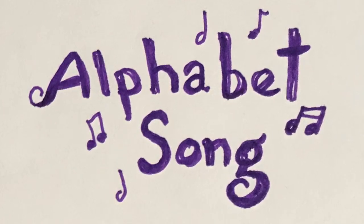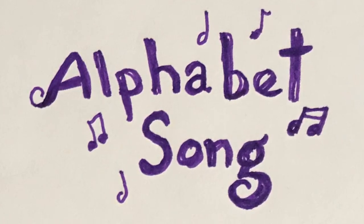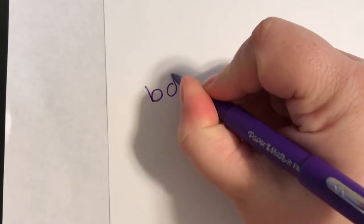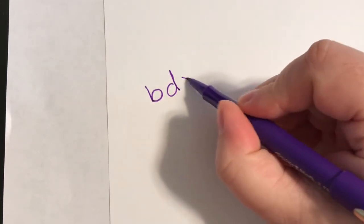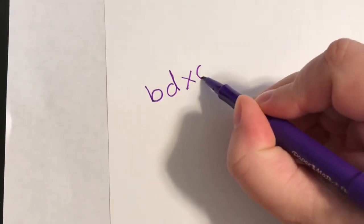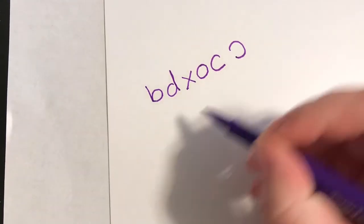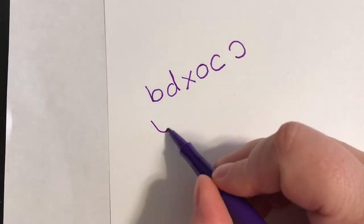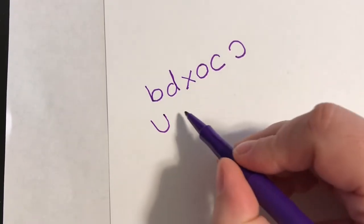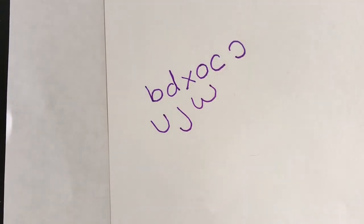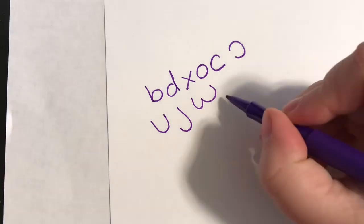Today we're singing the alphabet song. We're going to be using several letters of the alphabet, including B, D, X, O, C, forwards and backwards and upside down, U, J, W, O, and V. Don't forget V. We're using V a lot.